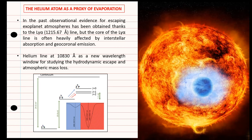More recently, a new diagnostic has been introduced, the helium line, the helium triplet in the near infrared at 1083 nanometers. And this diagnostic is not affected by geocoronal emission and by interstellar absorption. So it's a very powerful diagnostic.